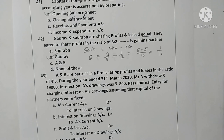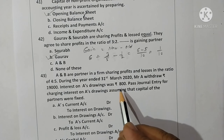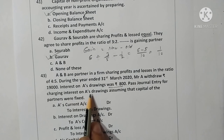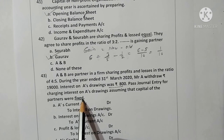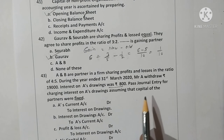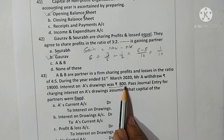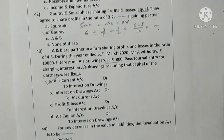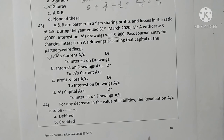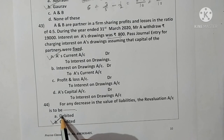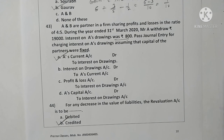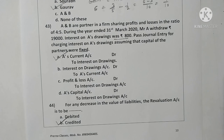Question forty-three: A and B are partners sharing profits and losses in ratio 4:5. During the year ending 31st March 2020, Mr. A withdrew Rs. 19,000; interest on A's drawings was Rs. 800. Assuming capital of partners is fixed, pass journal entry for charging interest on drawings. Since capital is fixed, it is transferred to current account. Entry: A's Current Account debit to Interest on Drawings account. Option A is correct. Question forty-four: for any decrease in the value of liabilities, the revaluation account will be credited. Option B is correct. These are the multiple choice questions; remaining questions will continue in the next part.